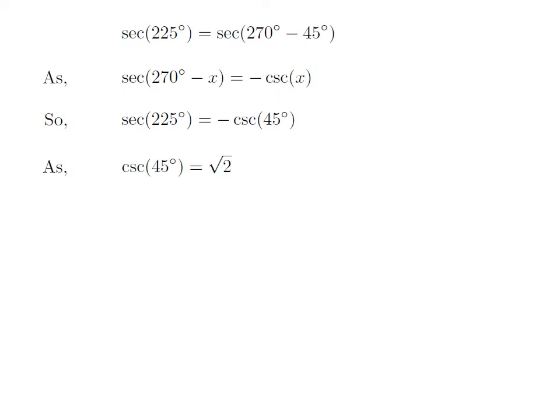We know the value of cosecant of 45 degree is equal to square root of 2. So, we get the value of secant of 225 degree is equal to minus square root of 2.